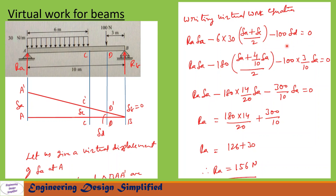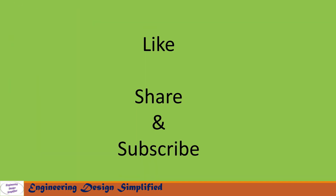We substitute delta_C and delta_D in terms of delta_A, and delta_B = 0, into the equation. After substituting all those values and simplifying, we get reaction at A: RA = 156 Newtons. That's all for today's video — if you like this content, please like, share, and subscribe. Thanks for watching.